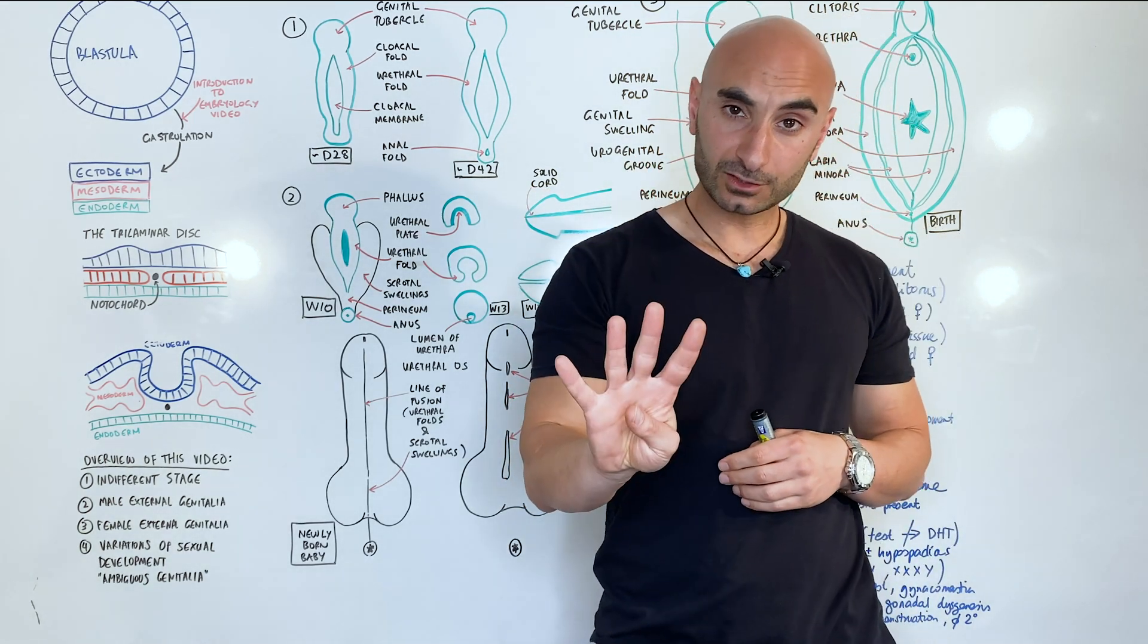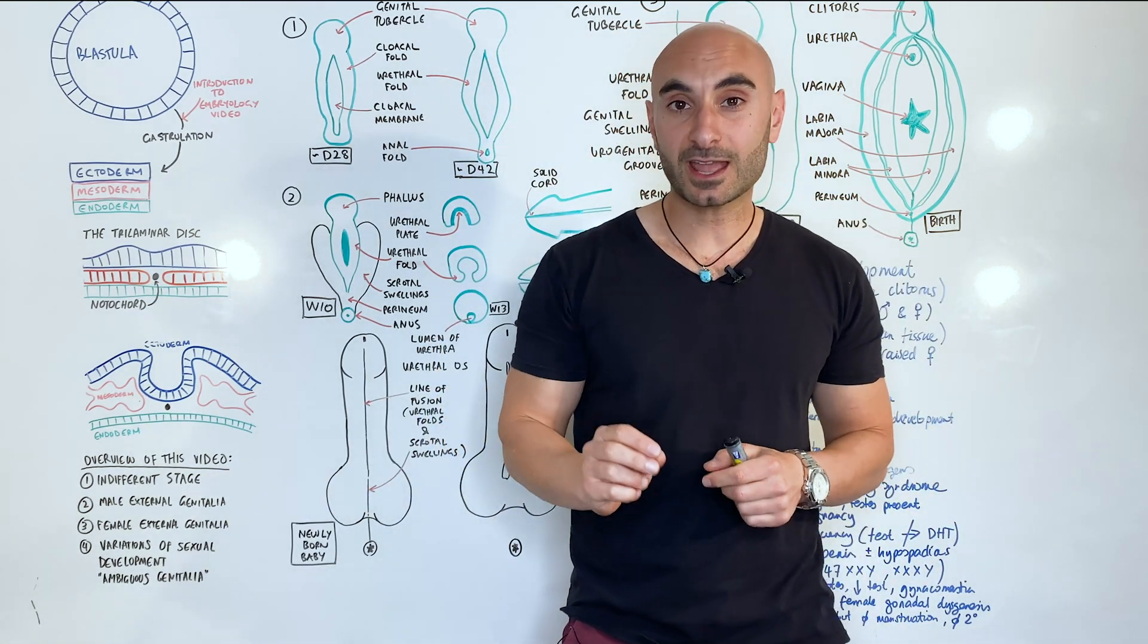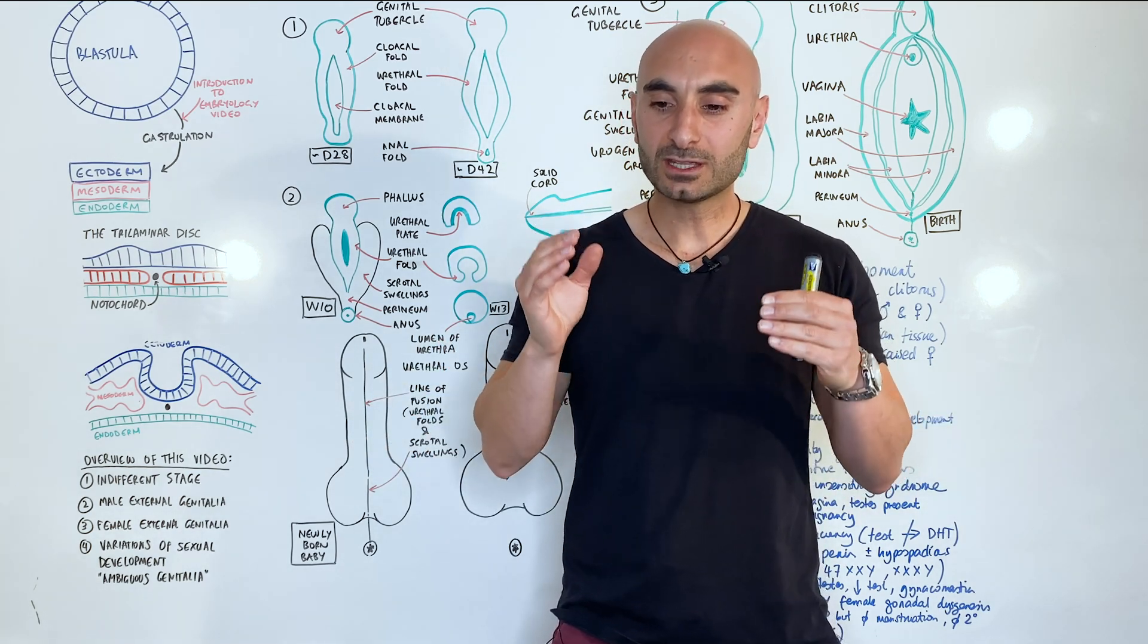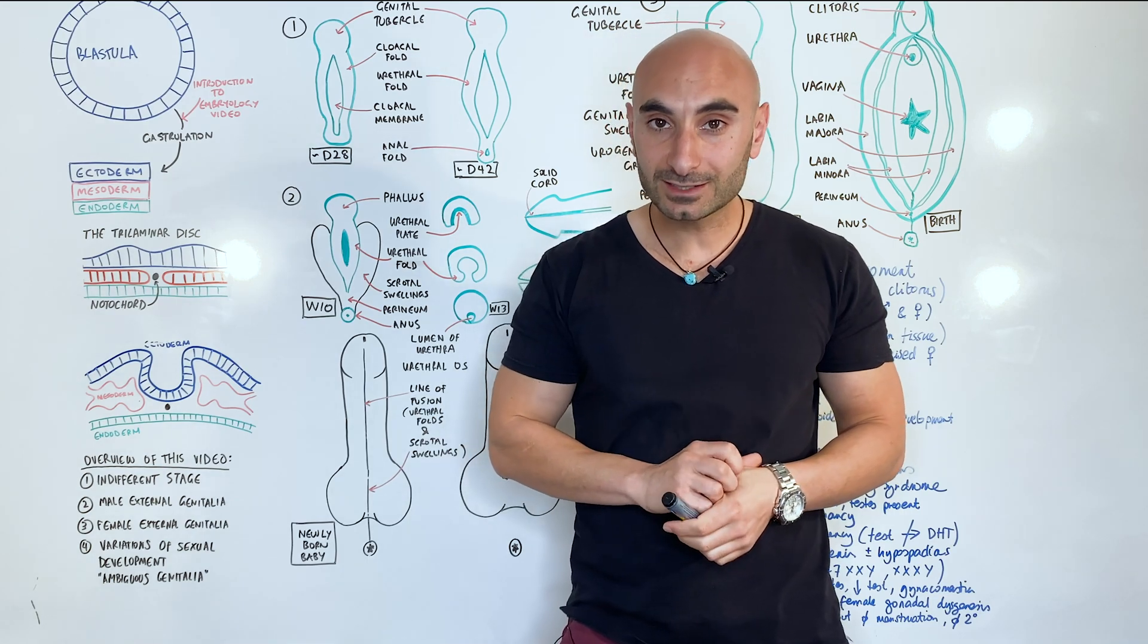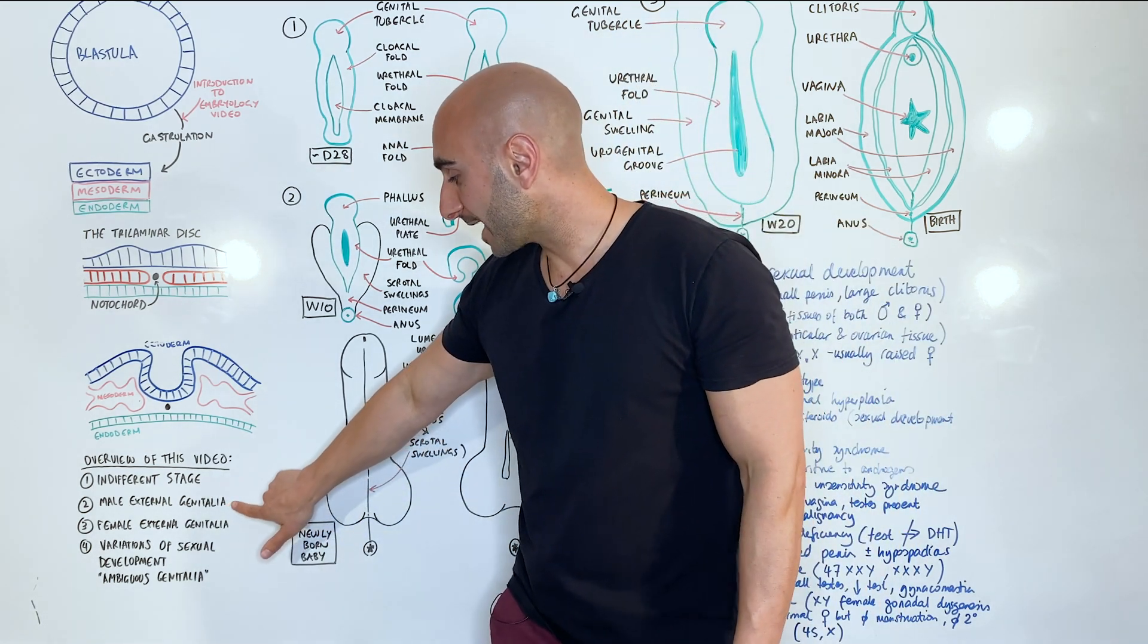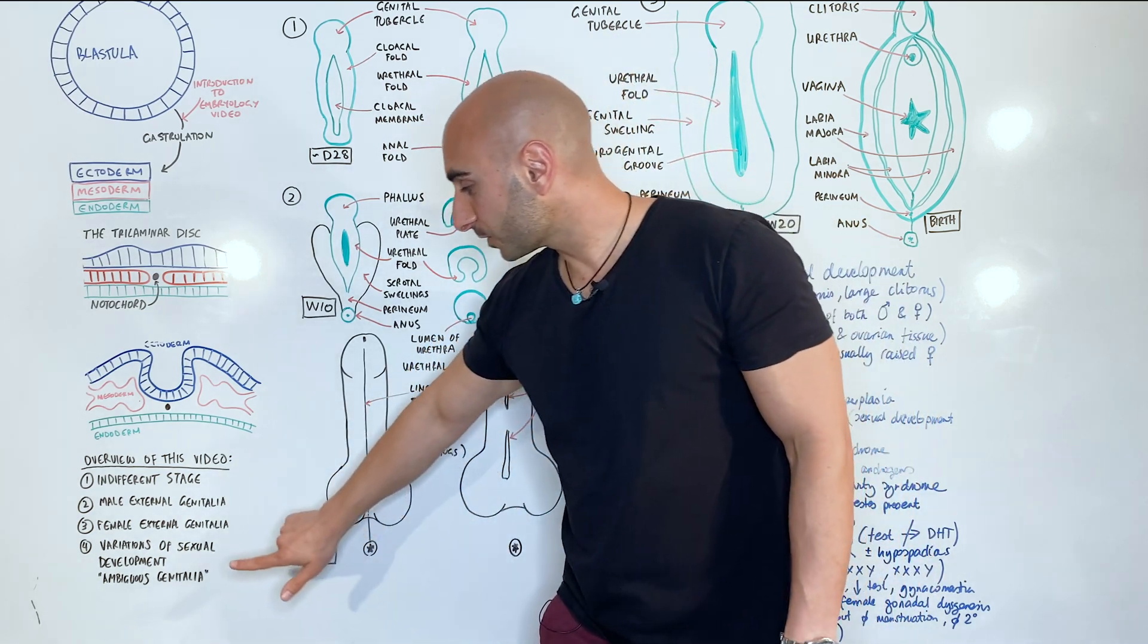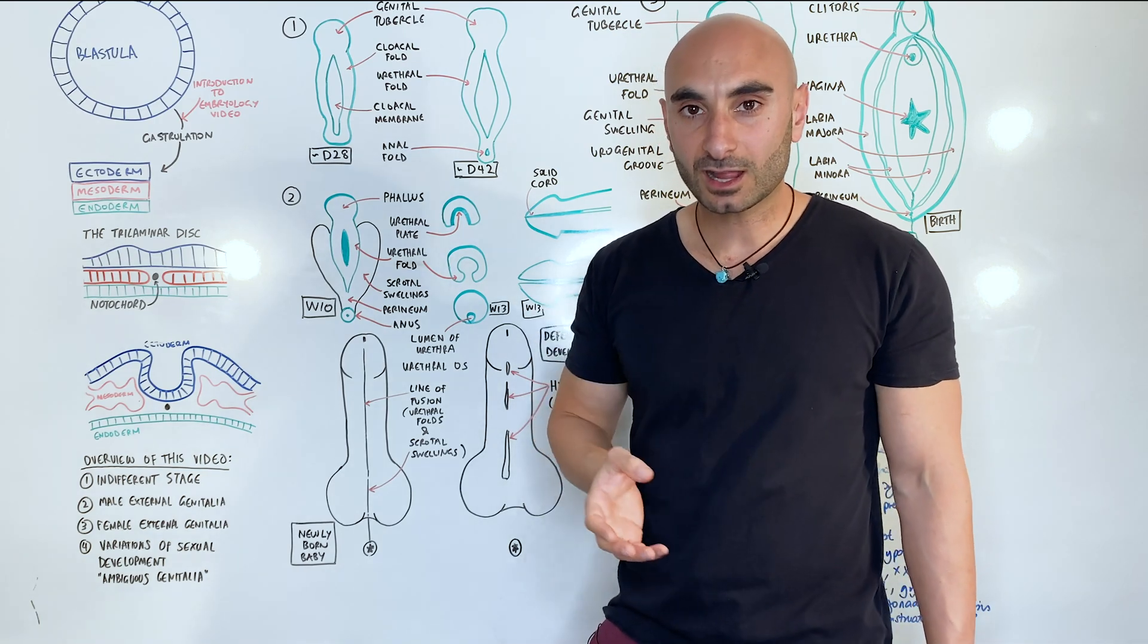Okay, so this video will be broken down into four parts. The first part we're going to talk about the indifferent stage, that's previous to when we are differentiating into male or female. So prior to seven weeks, we're going to be going over the male external genitalia, the female external genitalia, and also variations in sexual development, ambiguous genitalia.